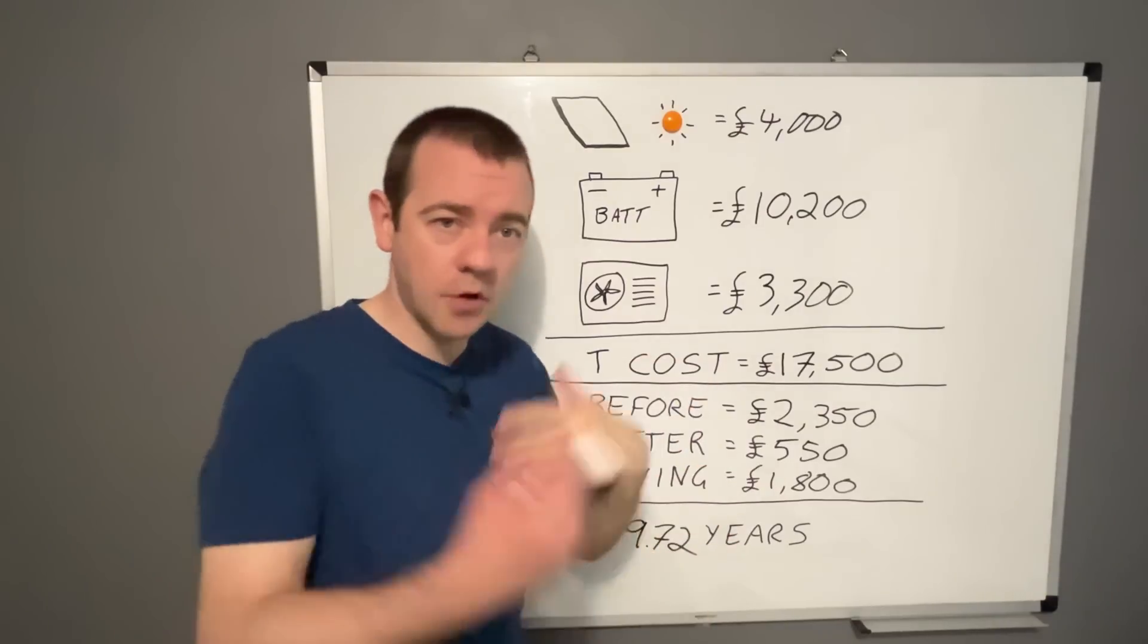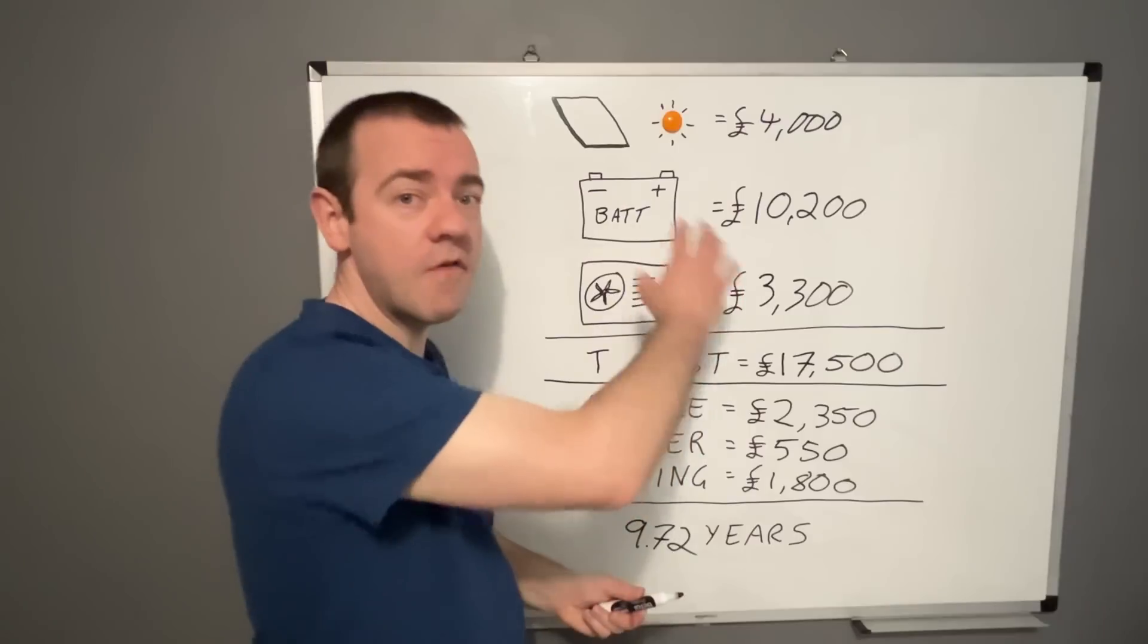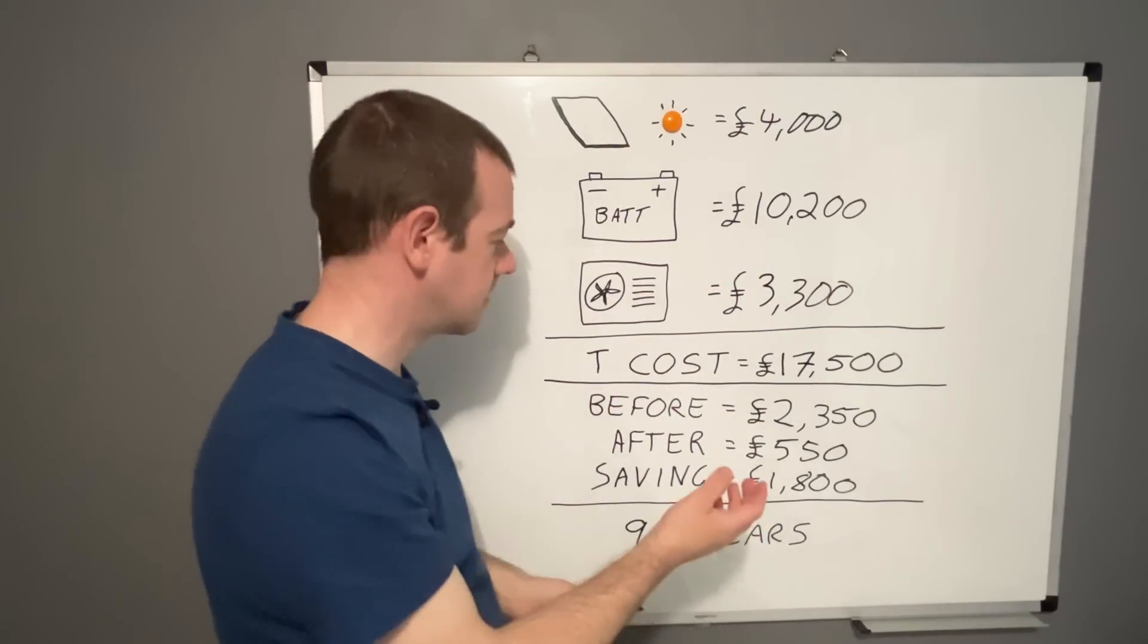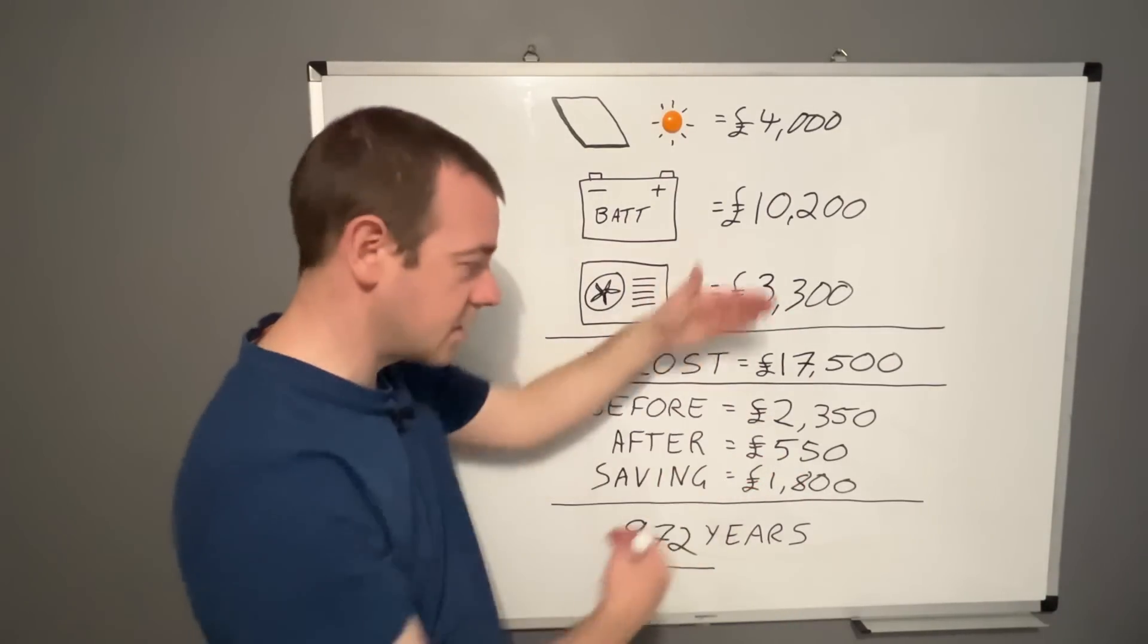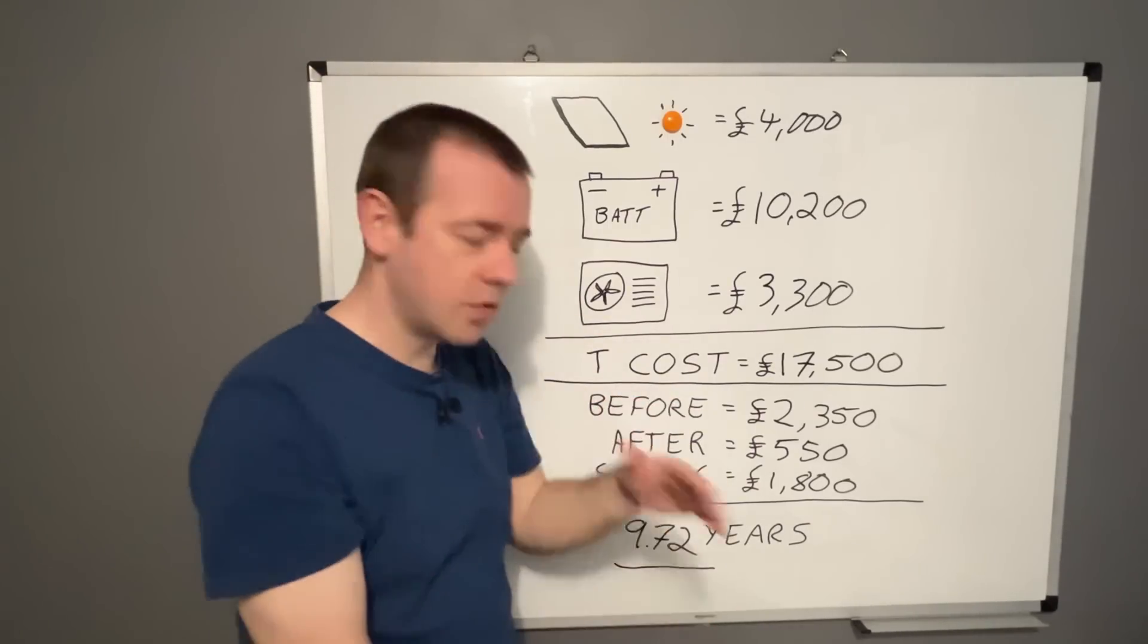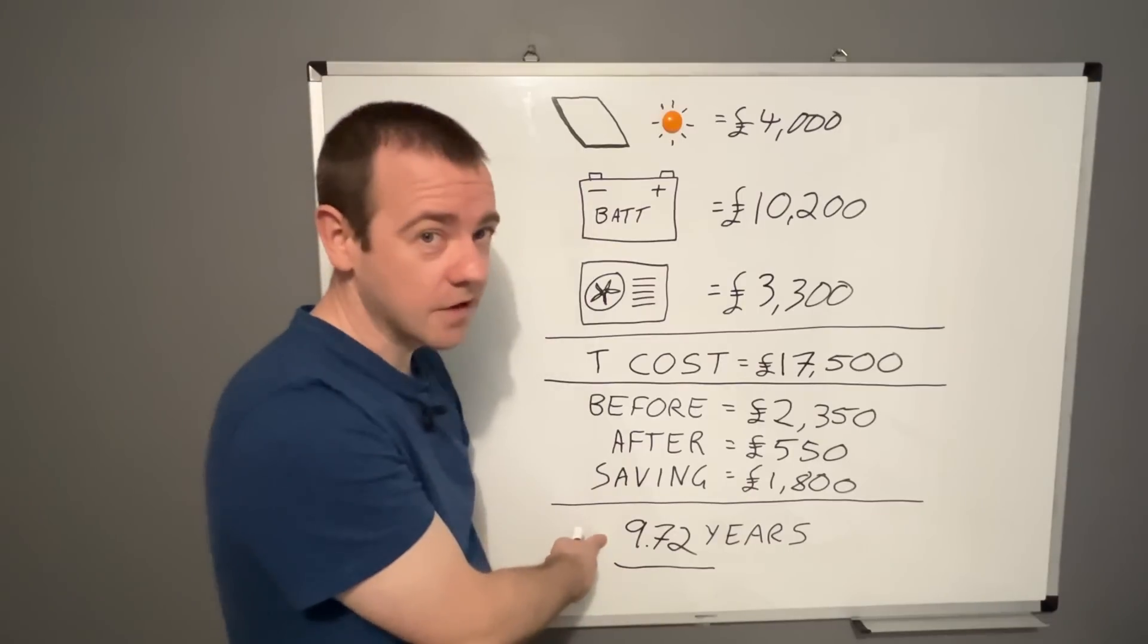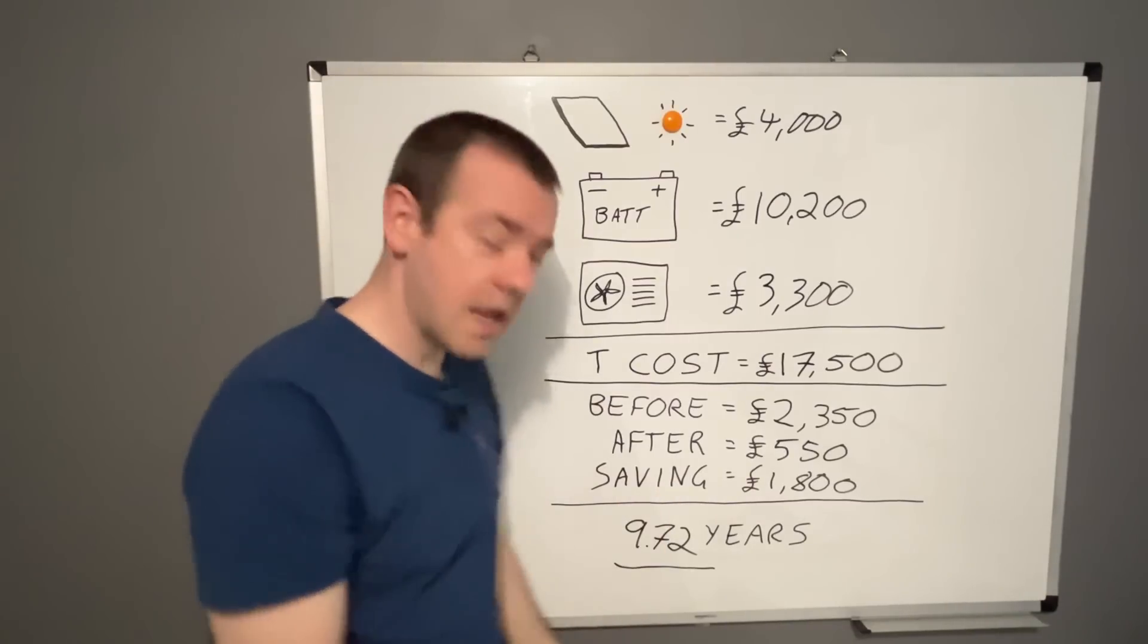So this is going to be very variable depending on your usage patterns. And as I said earlier, with the, you know, the gap that the savings increased between doing nothing and doing this, I would expect that to be definitely below nine years, even in this house with that system.